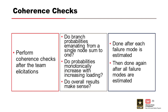After team elicitations are made, it is essential to perform coherence checks to make sure that event tree rules were not violated, that the probabilities estimated are monotonically increasing, and to get an overall gut check that everything lines up with the evidence considered. This is typically done after each potential failure mode is completely estimated, and then again after all failure modes are estimated. After each failure mode is estimated, we plot the system response curve to review its shape, check that inflection points make sense, and plot the risk on an FN chart. After all failure modes are estimated, we plot the results on the same chart to see if the overall results for the facility make sense.